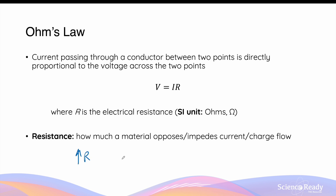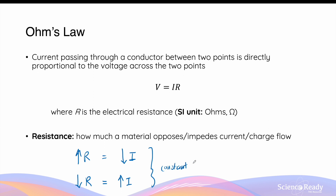The higher the resistance a material has, the slower the flow of charges through the conductor, and therefore you will have a smaller current. If a material has a lower resistance, meaning electrons can more easily flow through it, you will have a greater current. Both of these relationships assume the same or constant voltage causing the current in the first place.